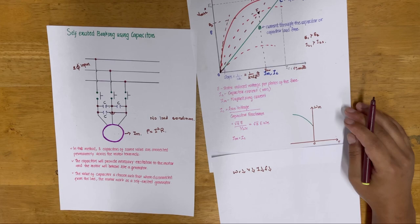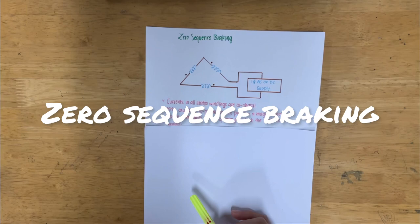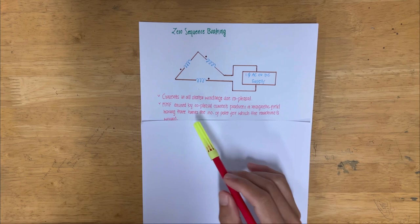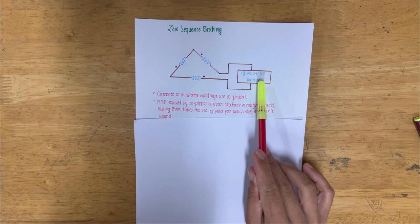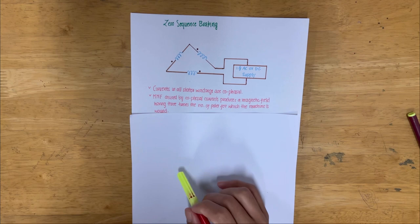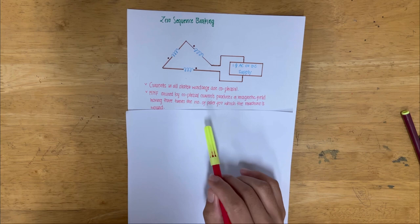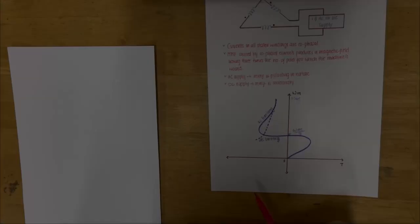Now we will discuss zero-sequence braking. In this braking, the three phases of the stator are connected in series across either an AC or DC supply. This type of connection is known as zero-sequence connection because the current in all three phases is co-phasal. The MMF produced by the co-phasal current creates a magnetic field having three times the number of poles for which the machine is wound. The nature of the speed-torque curve for AC and DC supply is shown in the graph.